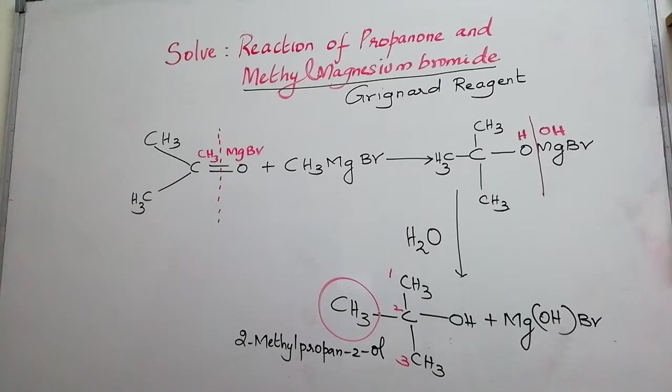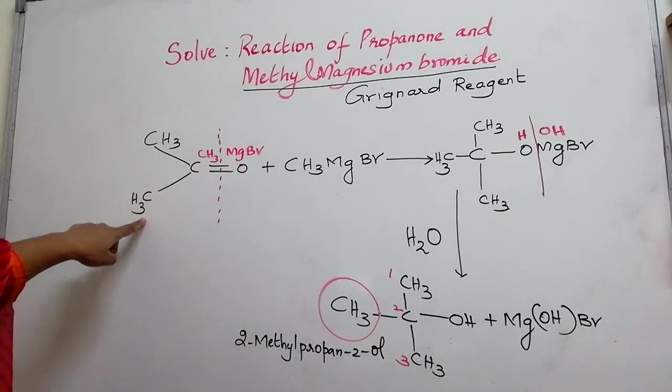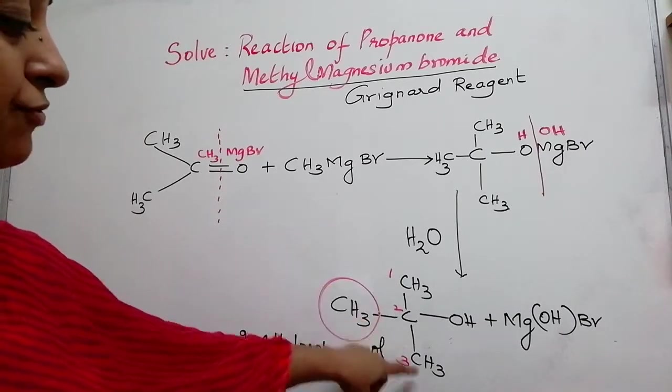The most important thing to notice here is propanone has 1, 2, 3 carbons. Propanone has 1, 2, 3 carbons, the reactant, whereas the final product has 1, 2, 3, 4.